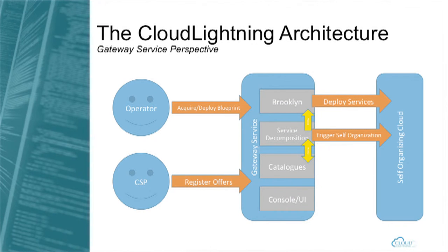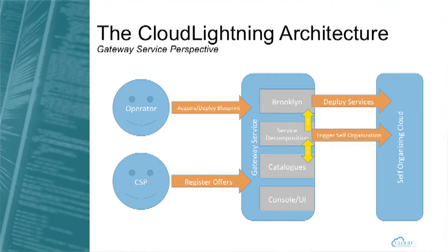How does it look like from the perspective of the user? We have two types of users. One is the cloud service provider, who offers resources to the beneficiaries, to the customers. And then we have the customers — we have an operator acting on behalf of them. These two actors are involved in interacting with the gateway service. The cloud service provider might offer hardware, servers, and so on, managed by the self-organizing cloud. And then operators might deploy applications on top of this self-organizing cloud.